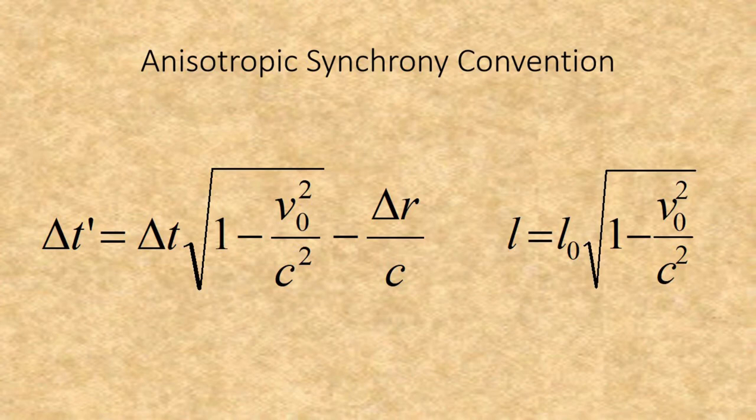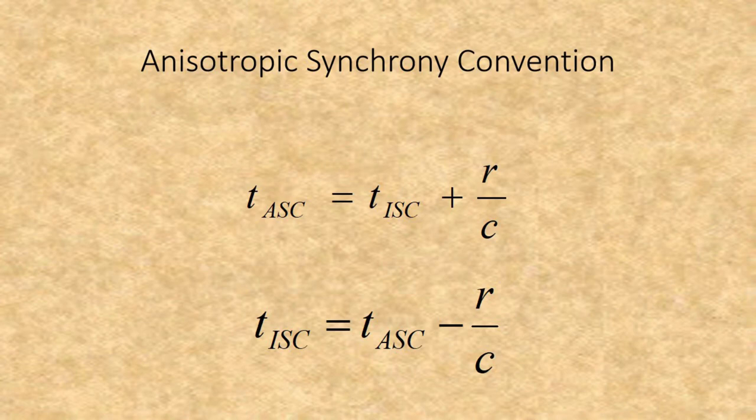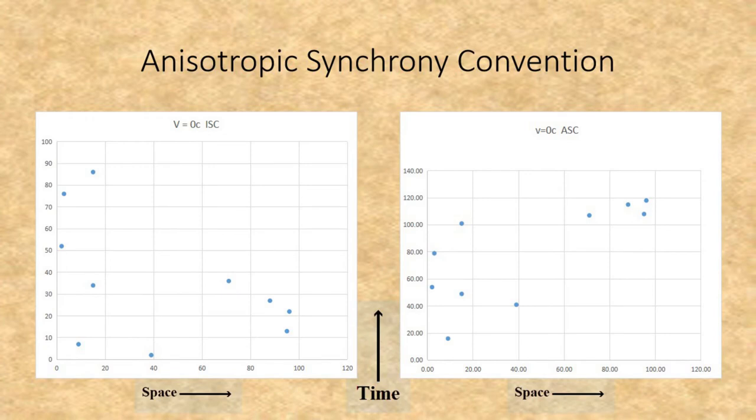In translating between the Anisotropic and Isotropic Synchrony Conventions, if you know the time in the Isotropic convention, simply add R over c to get the time in the Anisotropic convention. If you know the time in the Anisotropic convention, simply subtract R over c to get the Isotropic time. Here are two space-time diagrams illustrating this difference, both from observers at rest with each other in the same location. The first uses the Isotropic Synchrony Convention, the second the Anisotropic Synchrony Convention. Note that the further events are shifted up the time axis in the isotropic convention.